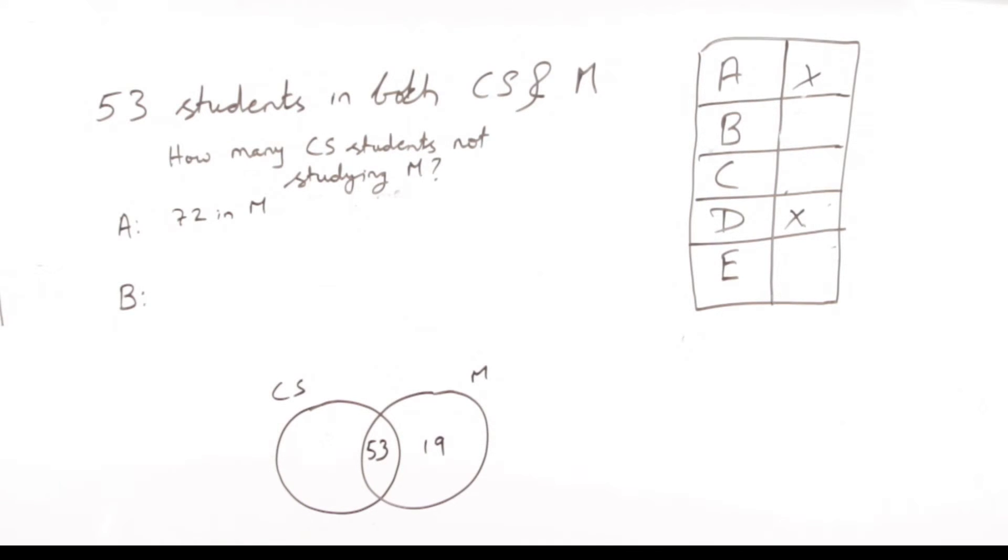Statement B says 59 students are in the computer science section. This helps us break it up. We already know 53 students are studying both, which means that 6 students are studying computer science only and not studying mathematics. We are able to answer the question with statement B. This is the correct answer choice.